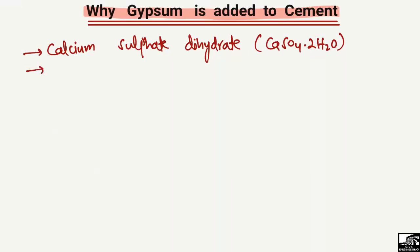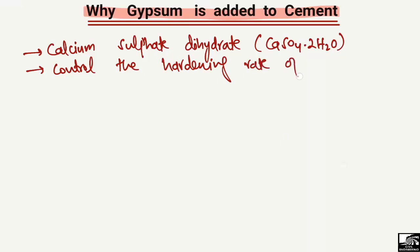The only reason we add gypsum to the production process of cement is to control the hardening rate of the cement. I will now explain this hardening rate in detail.